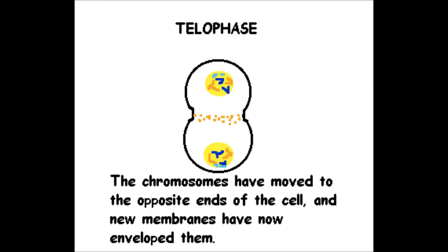Chromatids arrive at opposite poles of the cell and new membranes form around the daughter nuclei. The chromosomes disperse and are no longer visible under the light microscope. The spindle fibers disperse and cytokinesis, or the partitioning of the cell, may also begin during this stage.